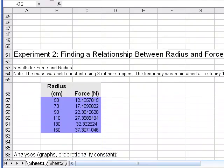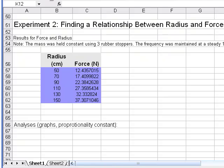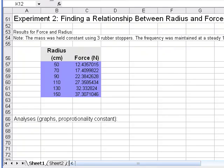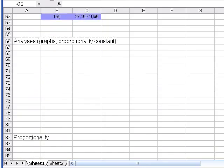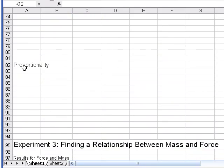Experiment two, much the same thing. The relationship here is between radius and force. And so as you can see, you've got quite a bit of data and the resulting force data, as well as what the other parameters were when that was gathered. Similarly, analyze your data here, provide some graphs, determine a proportionality constant, come up with a proportionality statement.